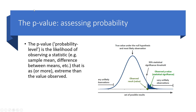We need a value that allows us to assess the likelihood of identifying a difference between means that is as or more extreme than the value we've observed. That statistic is the p-value — the probability value. We generate a statistic based on the difference between sample means that is so unlikely to have happened if the null hypothesis is correct that we can reject it and say there is a genuine difference between our groups.